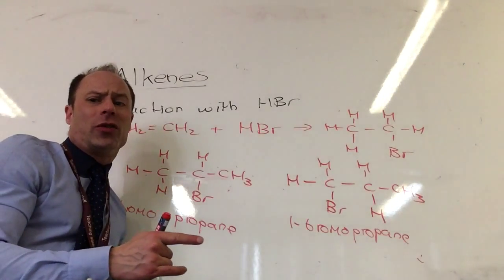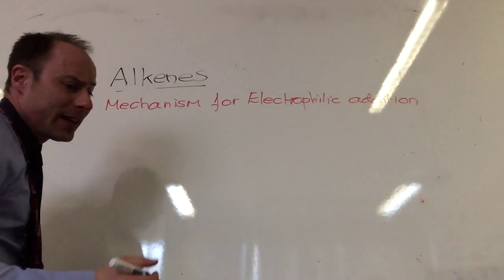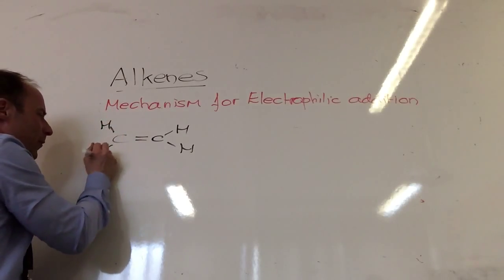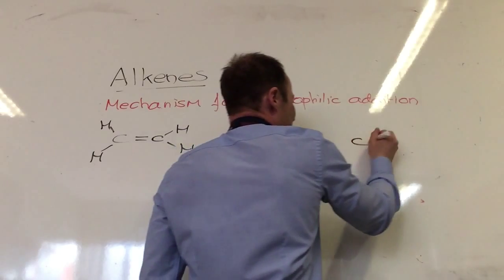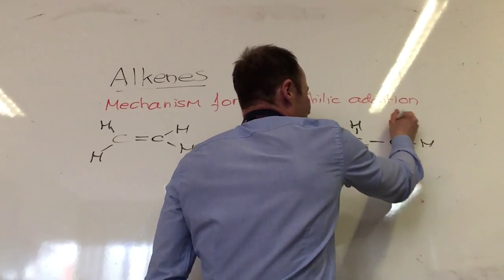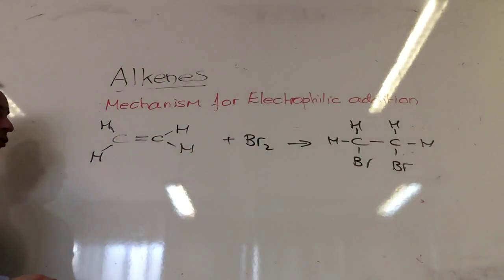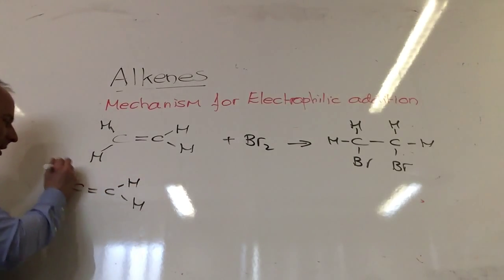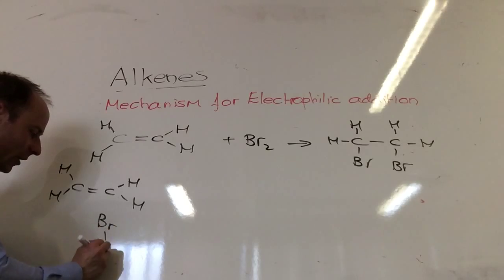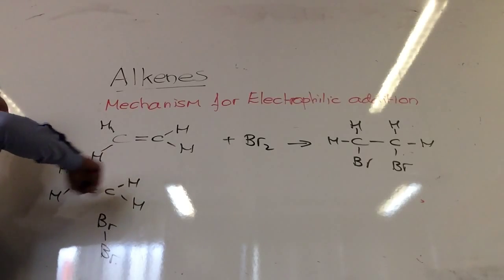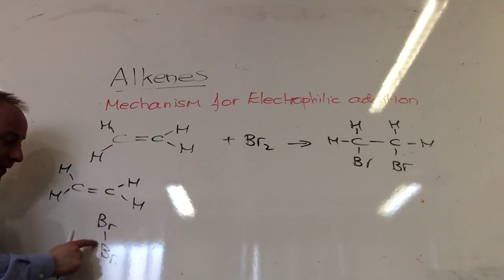I'm going to do the simplest case possible. I'm going to start with ethene and we're going to go through plus Br2 to make this dibromoethane. But rather than just drawing it out like this, we're going to go for the mechanism as to what's going on and try and explain. We're going to break this down into steps.